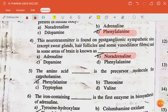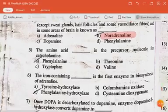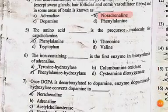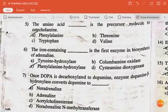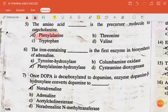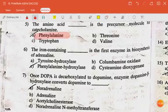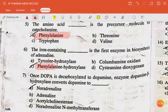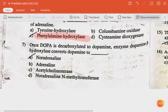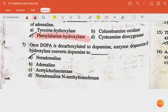The neurotransmitter found at postganglionic sympathetic sites and in some areas of the brain is noradrenaline. The amino acid phenylalanine is the precursor molecule for catecholamines. The iron-containing enzyme phenylalanine hydroxylase is the first enzyme in the biosynthesis of adrenaline.